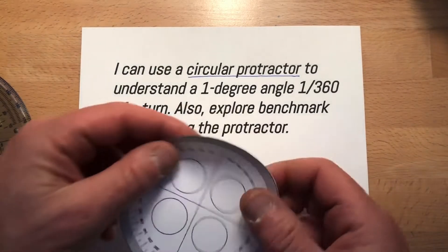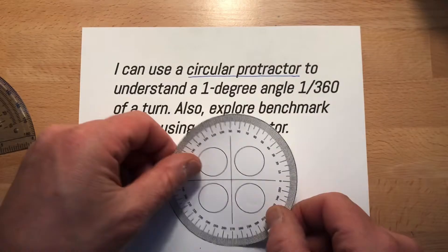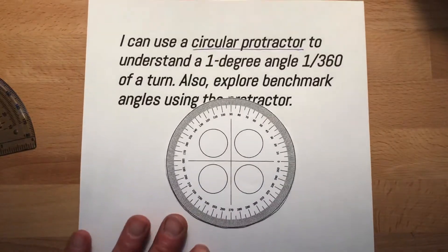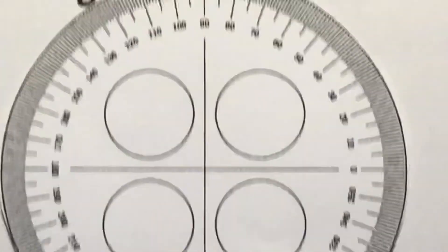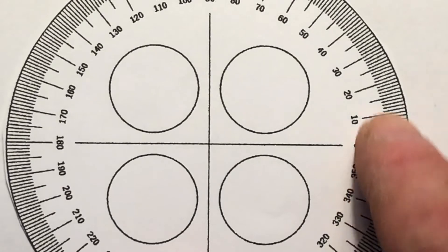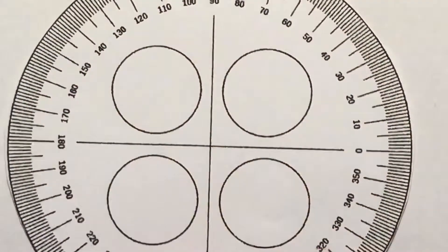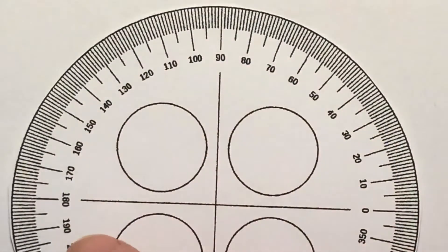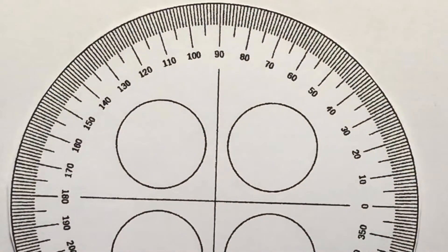This is a circular protractor. I'm going to zoom in on this in just a moment. So a circular protractor, you see how this starts at zero and goes all the way around? And you see all these little numbers around there? Those little numbers are called degrees.